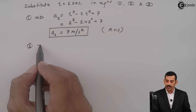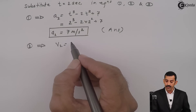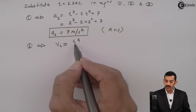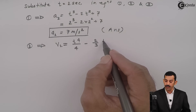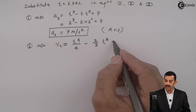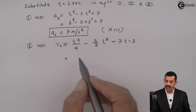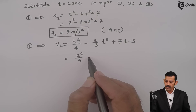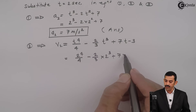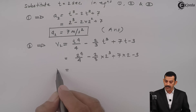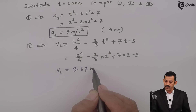Similarly, substituting into Equation 2, the equation of velocity: v = t⁴/4 - (2/3)t³ + 7t - 3. Putting t = 2: v = (2⁴/4) - (2/3)(2³) + 7(2) - 3. Using a calculator, this answer comes out to be 9.67 meters per second.